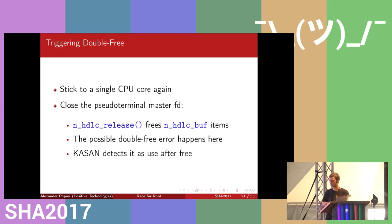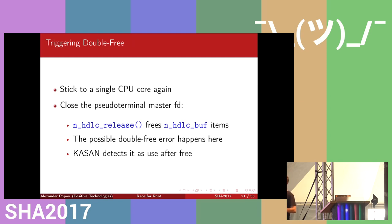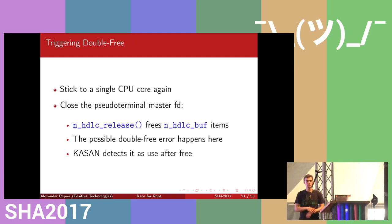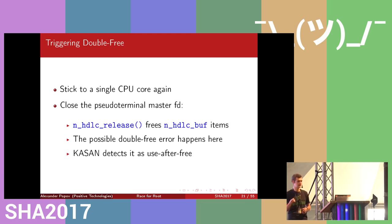To trigger the actual double free, we stick to the first CPU core and close the pseudo terminal. The release function works and frees the buffers in the free list. If we had the race condition, we have a doubled buffer and thus a double free. The Kernel Address Sanitizer can detect it — and the KASAN report was in fact the crash report from syzkaller that I originally received, which led me to investigate this issue.